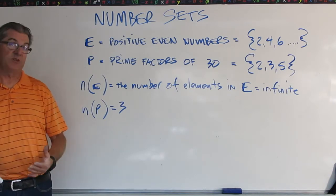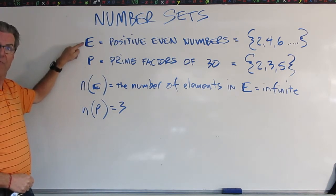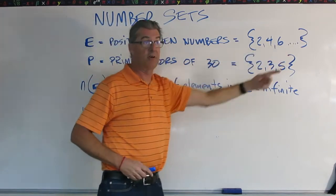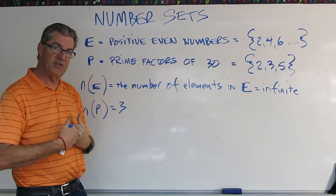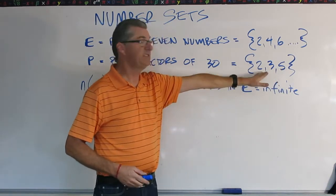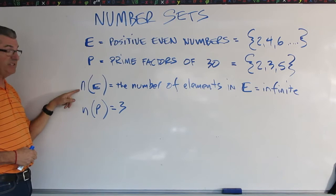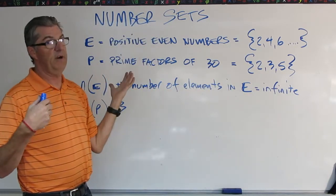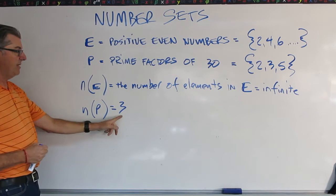One of the things we talk about with sets is how many objects are in a given set. So I've put two sets up here for you: E, which is the positive even numbers {2, 4, 6, ...} and P is the prime factors of 30, which are {2, 3, 5}. Now we're going to ask ourselves how many elements are in each set? We use this notation, lowercase n. The number of elements in E, n(E), is infinite because E goes on forever. How about the number of elements in P? Well, n(P) = 3.